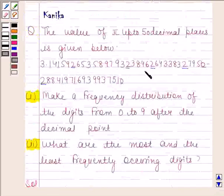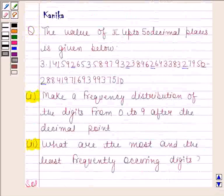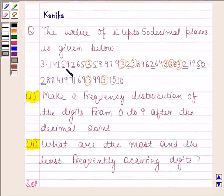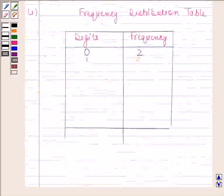2 appears 5 times, so frequency of 2 is 5. 3 appears 8 times, so frequency of 3 is 8.